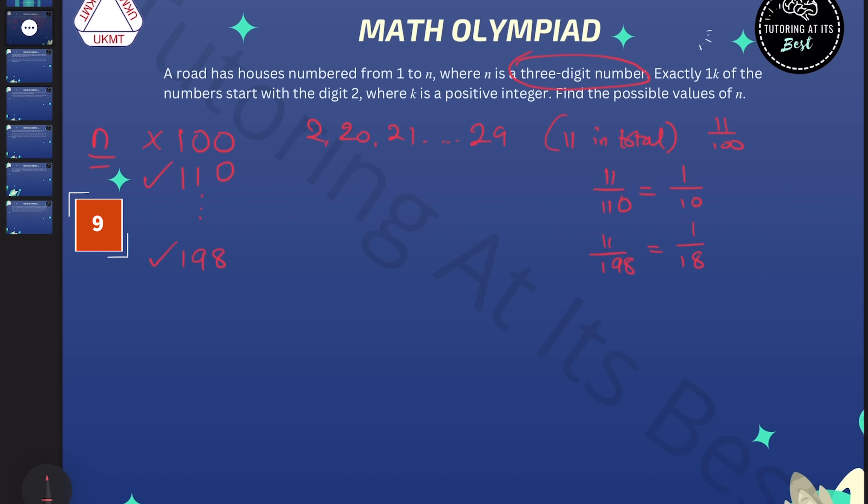So what happens next? When we go to 200, we've got another house that starts with the number 2. So we've got 12 of those now. So that's 12 over 200. And we know 12 doesn't go into 200, so it remains as it is.